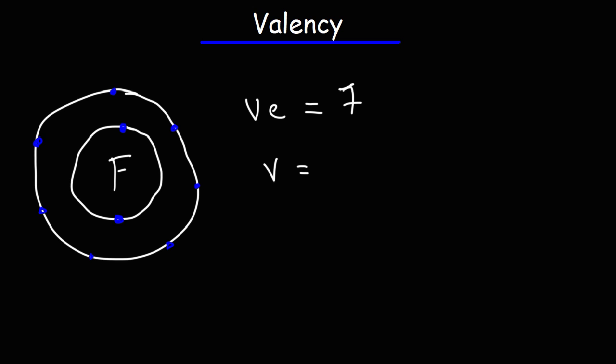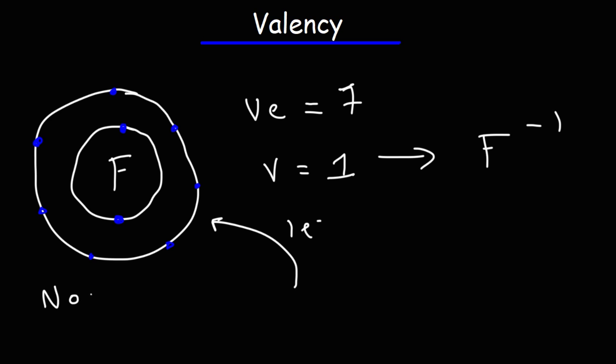Fluorine wants to have eight electrons in order to satisfy its octet requirement. It wants to have the maximum number of electrons possible in the second shell. So in order to do that, it wants to acquire just one electron, and so its valency is one. Once fluorine acquires that one electron, it will turn into the fluoride ion. Non-metals like fluorine and oxygen like to acquire electrons, while metals like to give away electrons.